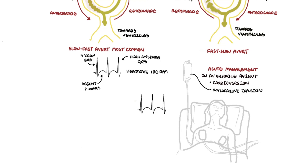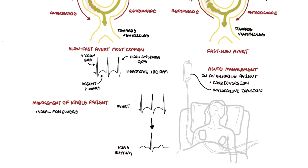The supraventricular tachycardia will revert back to sinus rhythm. In patients who are stable without hemodynamic compromise, patients can undergo a vagal maneuver. Vagal maneuvers include the Valsalva maneuver, which can be done for example by asking someone to blow into a syringe. If vagal maneuvers do not work, adenosine can be given.